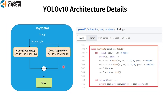Here is the RepVCGDW block, based on the RepVCGDW class in block.py. This block has two depth-wise convolutional blocks, element-wise addition, and a SiLU activation function. The input goes through two depth-wise convolutional blocks: the first has kernel size 7, stride 1, and padding 3; the second has kernel size 3, stride 1, and padding 1. The results of the two depth-wise convolutional blocks are added together, then the SiLU activation function is applied.